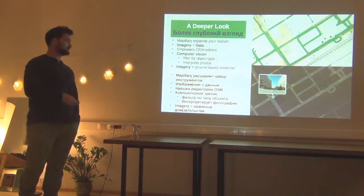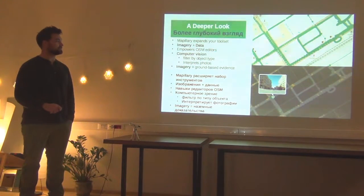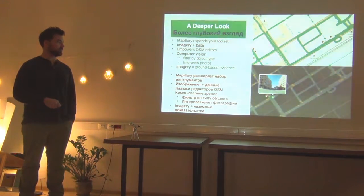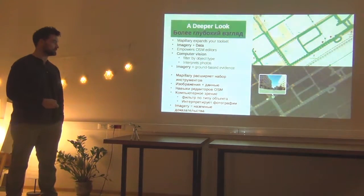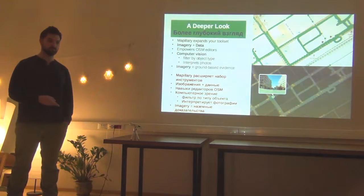This is an example from my hometown in Montana, USA. Most of these images on the map are from me, and after they go through the system, you can see locations of what is detected in the images. Here I was looking for crosswalks — like a zebra crosswalk — and we see them located in these images. We can use this to build OpenStreetMap and other geospatial data.